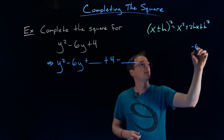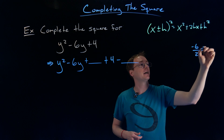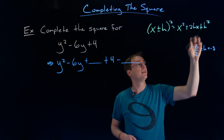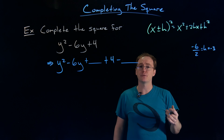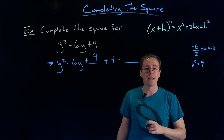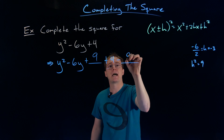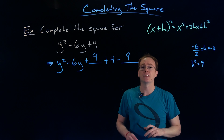So if we take negative 6 and divide it by 2, that gives us h is equal to negative 3. Now that we know h is equal to negative 3, we can just square that and we have found our constant term — negative 3 squared is positive 9. So we need to add a positive 9 in this blank spot. That makes these first three terms a perfect square trinomial, which guarantees they'll be able to factor as some binomial squared. And then we have to subtract away that constant term we just added in, so we have to minus 9 at the very end.